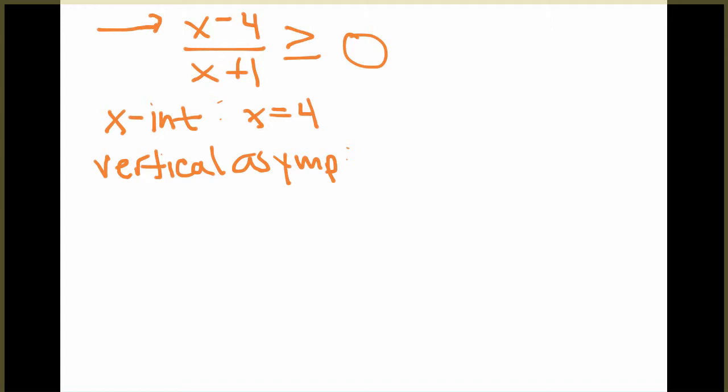And the vertical asymptotes come from when the denominator is equal to 0. And so in this case, our vertical asymptote will be just at x equals negative 1.